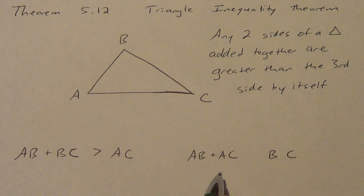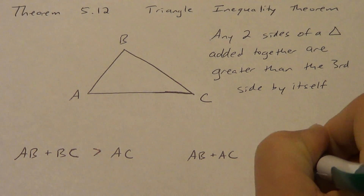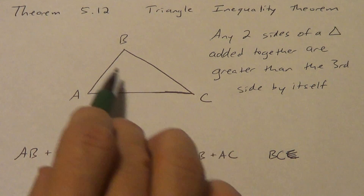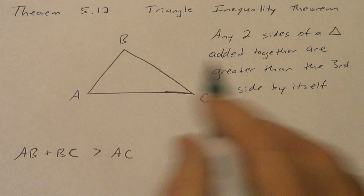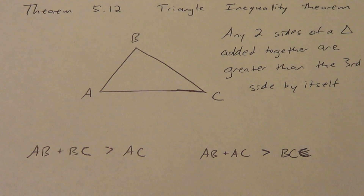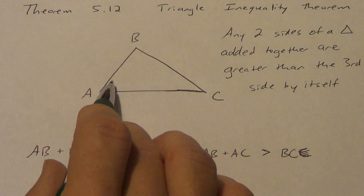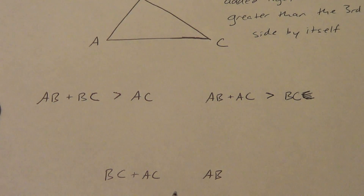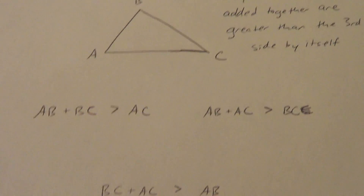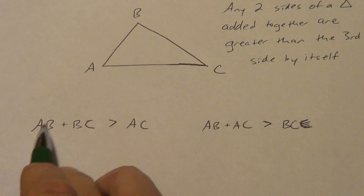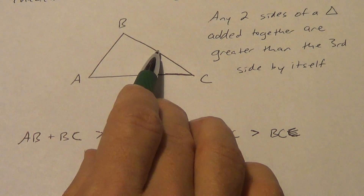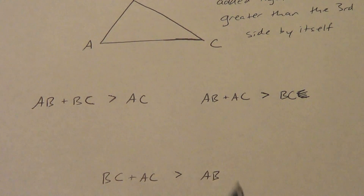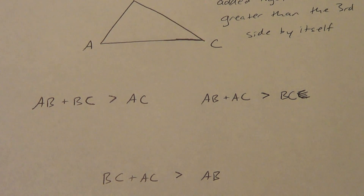The same thing works here. What if I add AB and AC together? Is that going to equal BC? If I walk straight from B to C, that's a whole lot shorter than going from B to A and then over to C. So AB plus AC is going to be greater than BC. I left BC by itself and AB by itself. So BC plus AC is going to be greater than AB. Remember, it says any two sides. You've got to be able to do all three options.